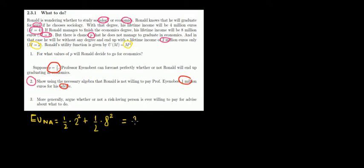So that would give us 4 over 2, which is 2, plus 64 over 2, which is 32, and expected utility of 34.